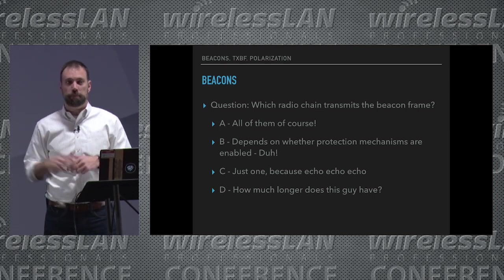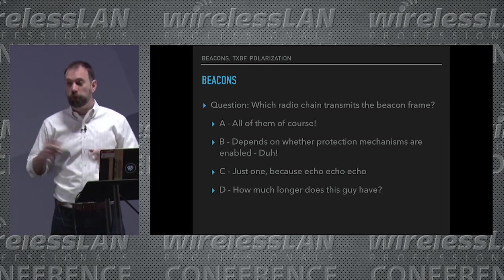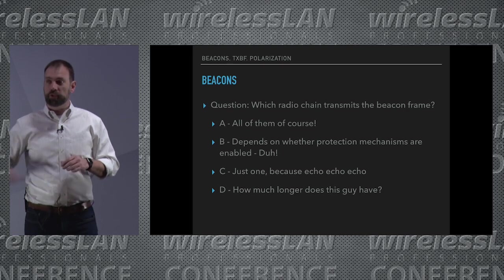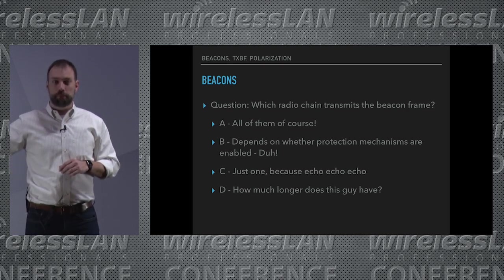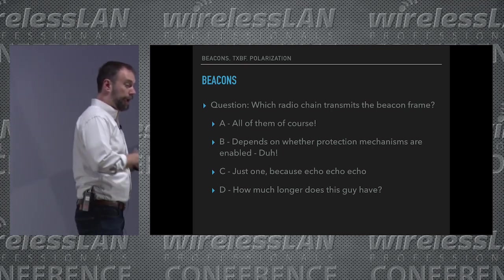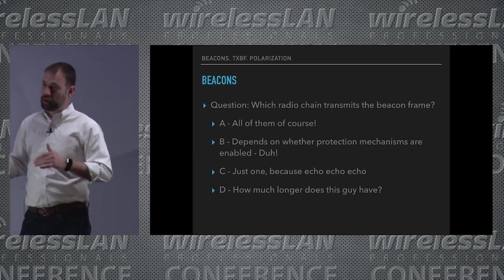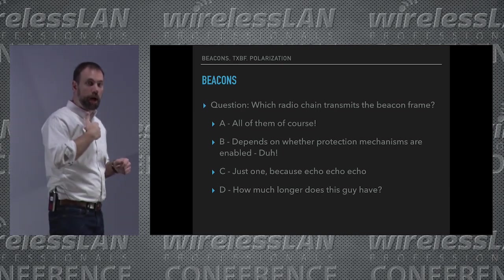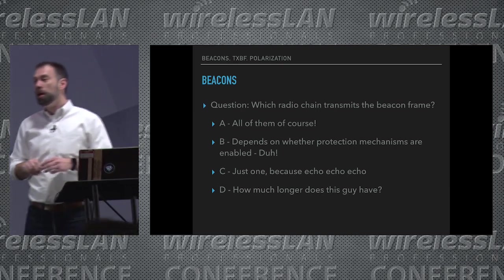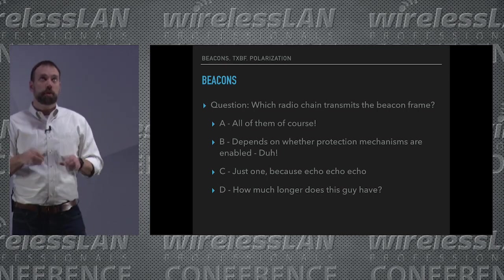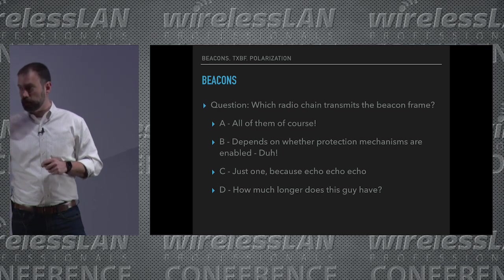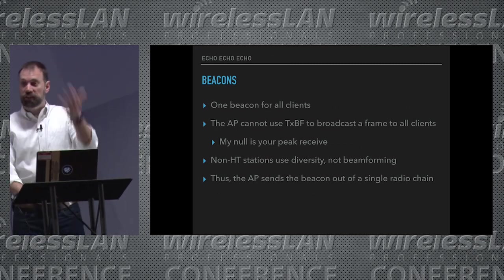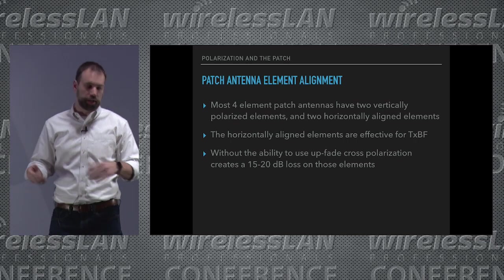Quick question: where does the beacon come out from in a four-radio AP? For a long time I assumed it was all the radios, but then I realized you cannot do that — we still have B and G clients that don't understand transmit beamforming. More importantly, if you tried to send a beacon out via transmit beamforming, you get the benefit of it but the client doesn't, and that client is still associated with the access point. In almost all situations I've tested, an access point sends out the beacon on a single radio chain.